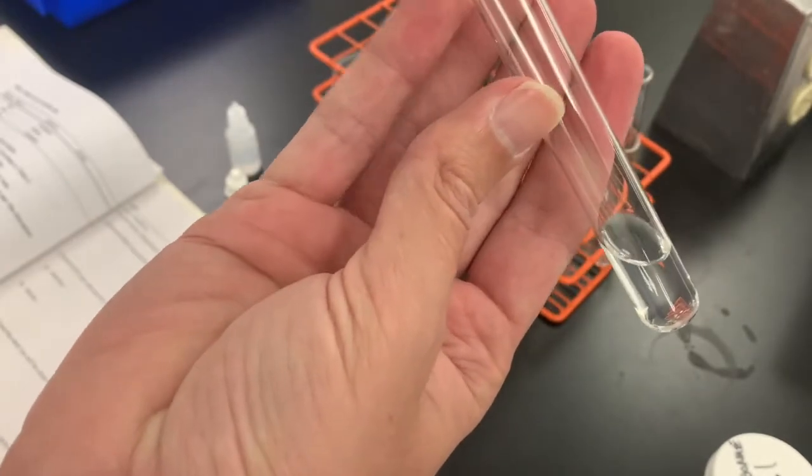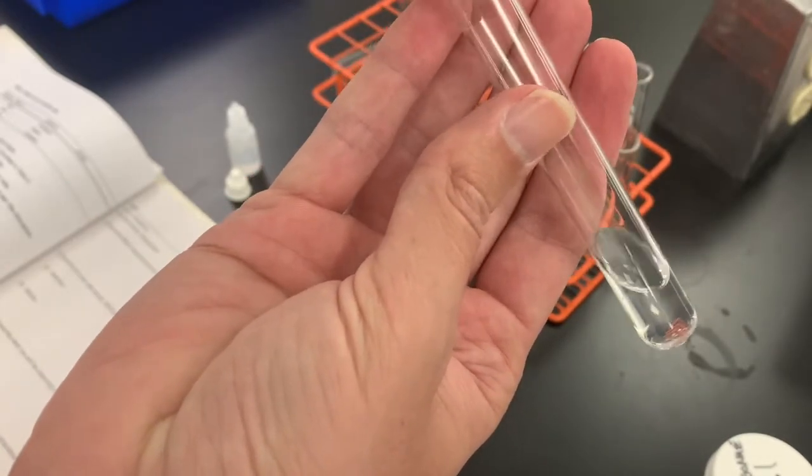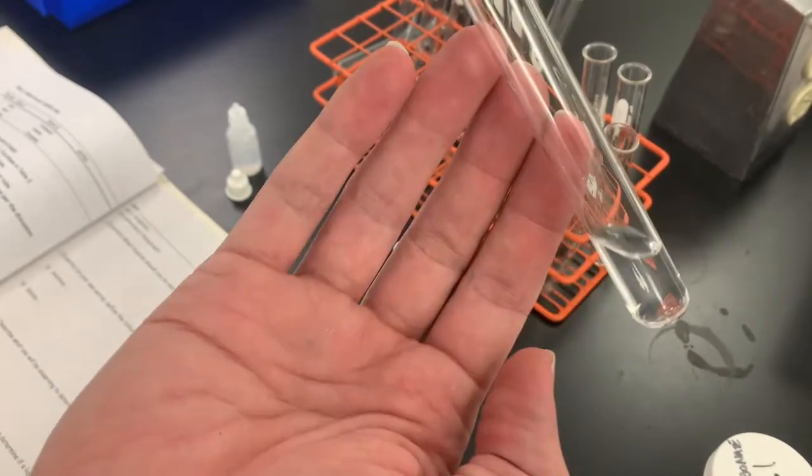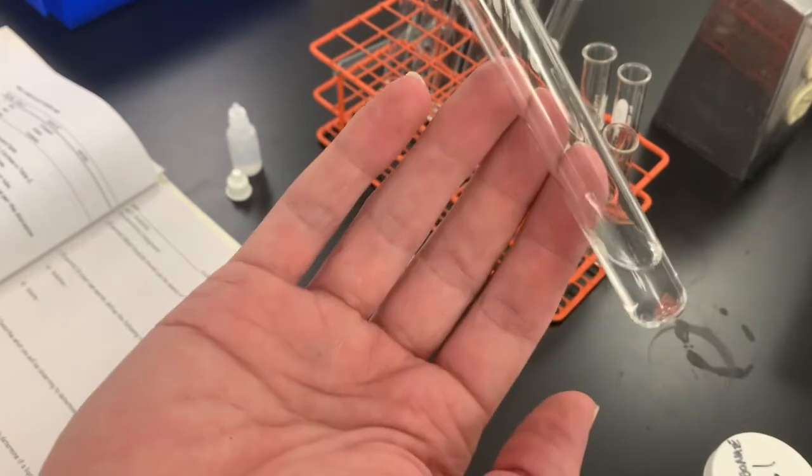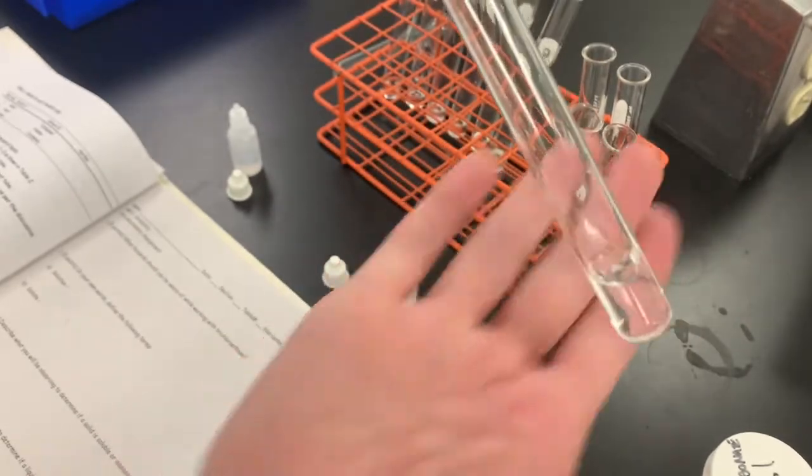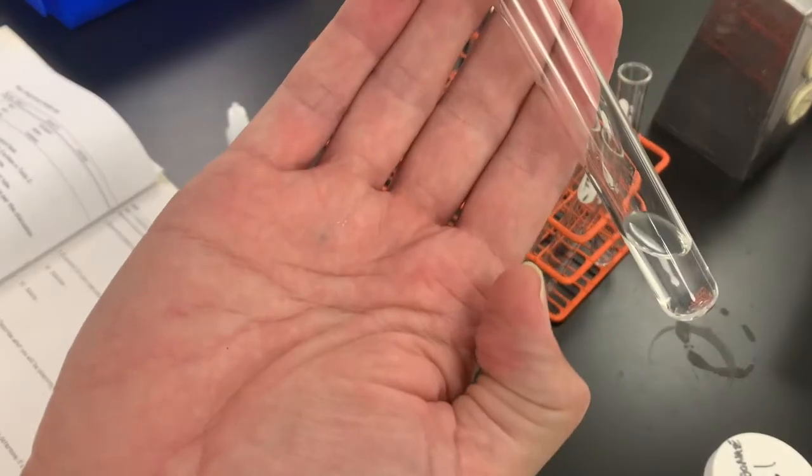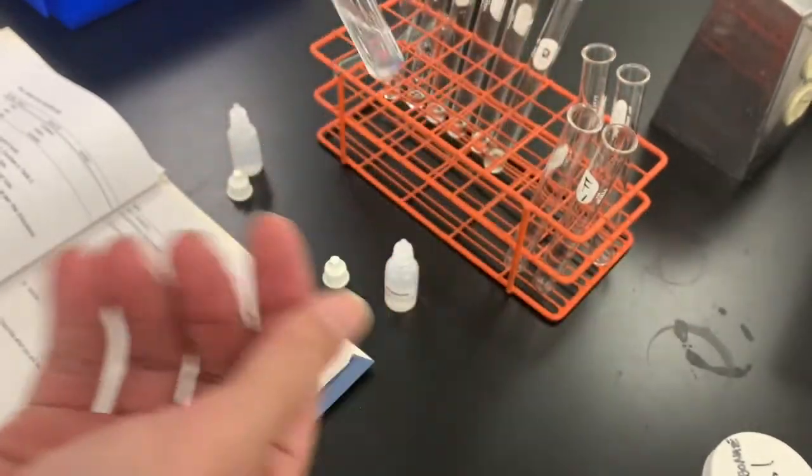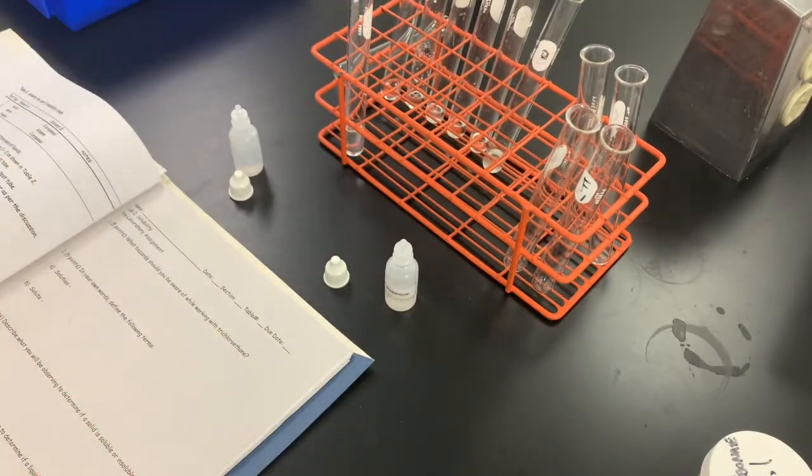And so that's test tube number one of part two. Sometimes, if you have immiscible things like salad dressing or oil and water, you can mix and look for bubbles floating around. There we are, so that's what you can do.